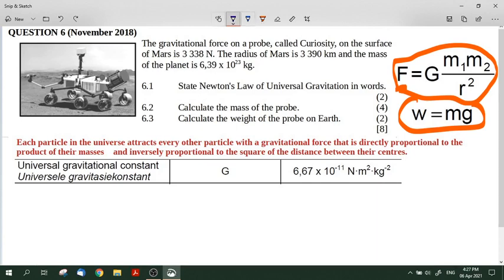Okay, it says the gravitational force on a probe called Curiosity on the surface of Mars is 3,338 Newtons. The radius of Mars is 3,390 kilometers and the mass of the planet is 6.39 times 10 to the power of 23 kilograms.